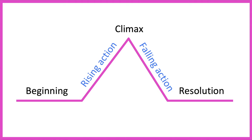The beginning of a story is usually when the characters and settings are introduced to the reader. The rising action is where the main character faces a problem that needs to be solved — this is known as the conflict. The climax is the most exciting part of a story in which we learn the outcome. The falling action leads the reader to the end of the story. The resolution is the end of the story.